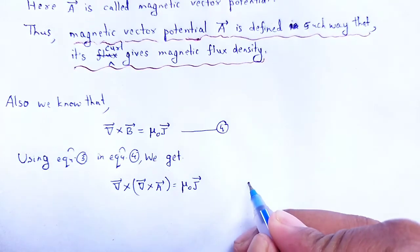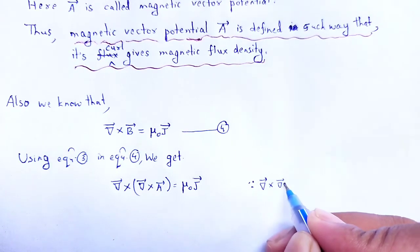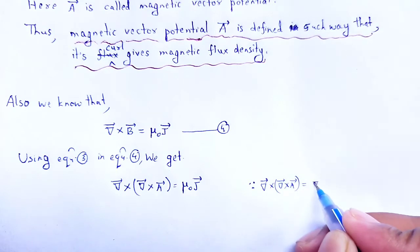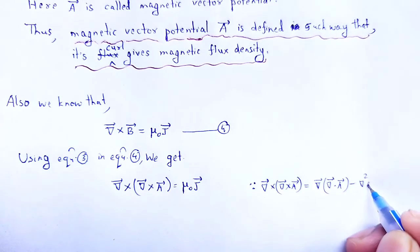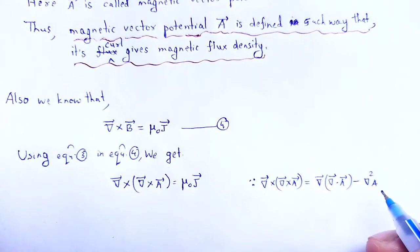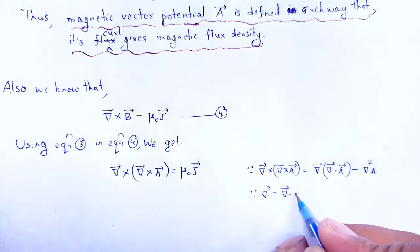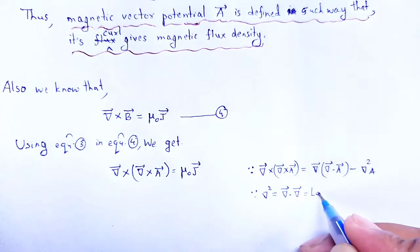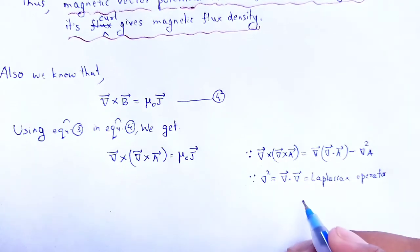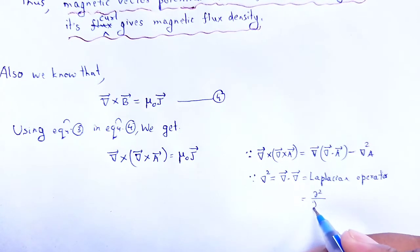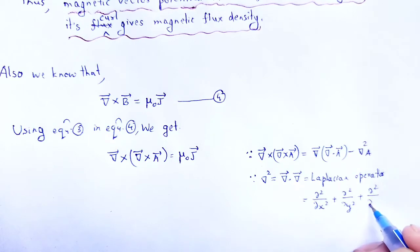From the vector identity, grad cross (grad cross A) = grad(grad dot A) − grad²A, where grad² is known as the Laplacian operator, defined as grad dot grad, equal to ∂²/∂x² + ∂²/∂y² + ∂²/∂z².